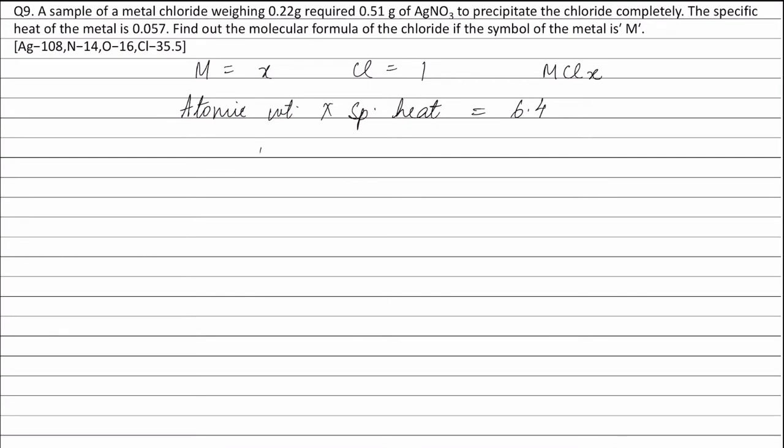Therefore, atomic weight of the metal is equal to 6.4 divided by specific heat of the metal, that is 0.057, and this is equal to 112. The reaction between the metal chloride and AgNO3 can be written as MClX plus AgNO3 forms AgCl plus M(NO3)X.